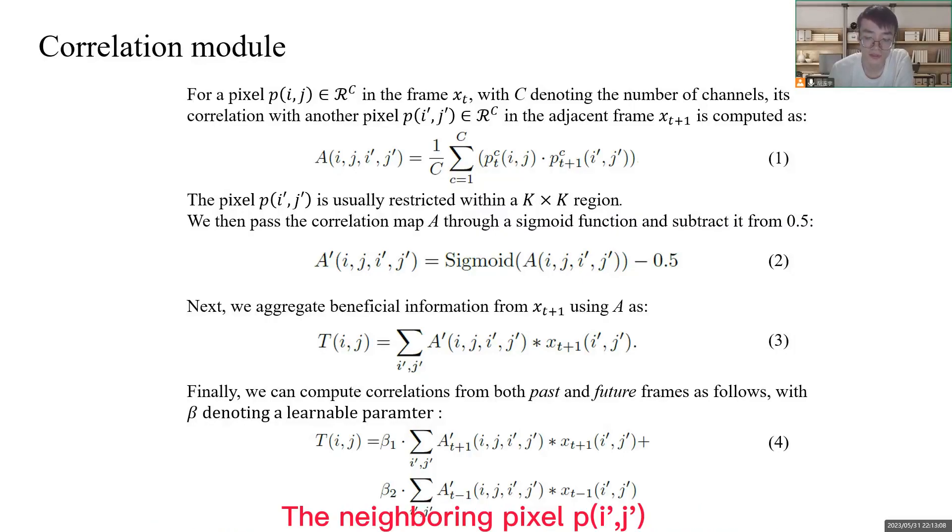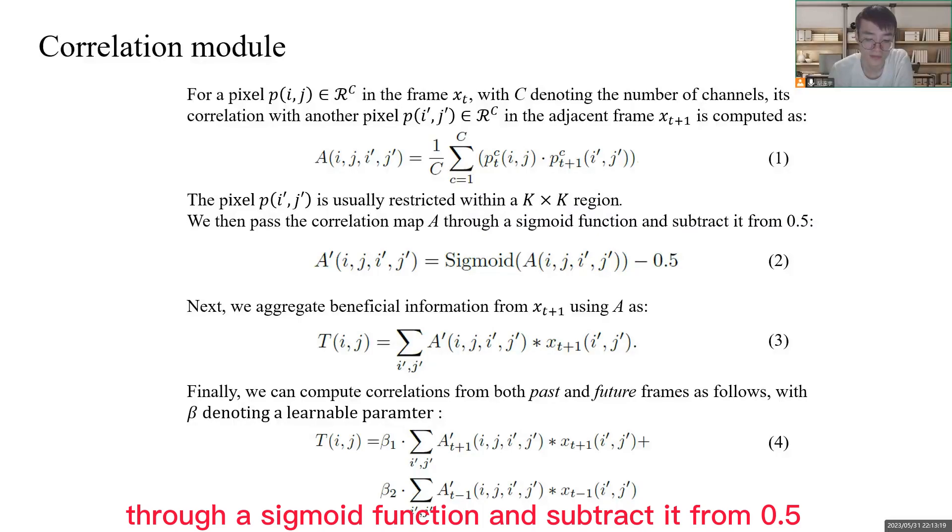The neighboring pixel p(i',j') is usually restricted within a K×K region. We then pass the correlation map A through a sigmoid function and subtract it from 0.5 to emphasize information regions with positive values and suppress redundant areas with negative values in equation 2.